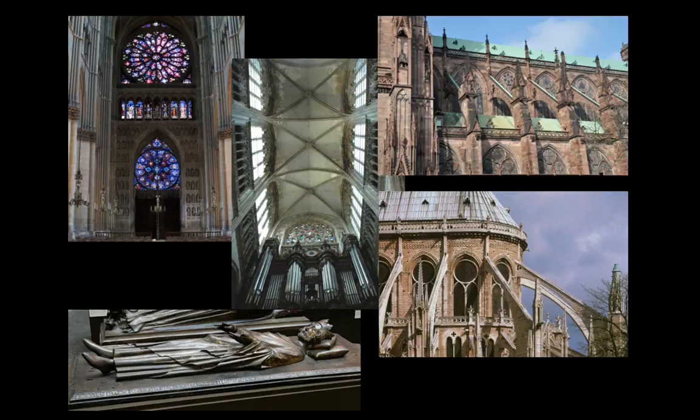Some noteworthy English-specific qualities of the Abbey include the intricacy of its main arches' moldings, the use of Purbeck marble, as well as its single aisle — since Gothic cathedrals of the time primarily had double aisles.